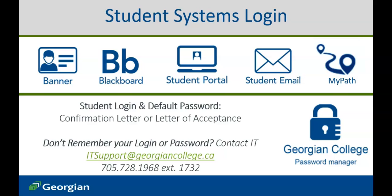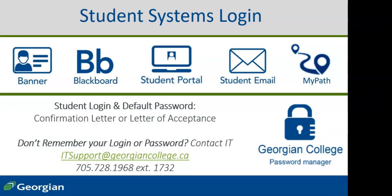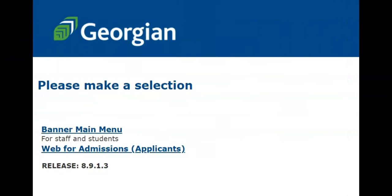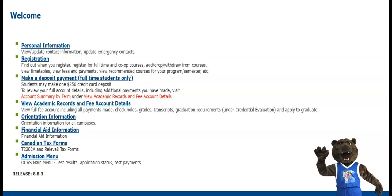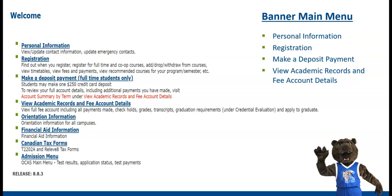If you no longer have access to your login credentials, or simply require assistance logging in, contact the Georgian College IT Service Desk. Once logged in to Banner, select Banner Main Menu. The Main Menu presents us with a number of options to support our preferred Banner uses. Under each Banner tab is a series of sub-tabs that can be found on the next screen. We'll be exploring the first four tabs, which house Banner's primary functions.